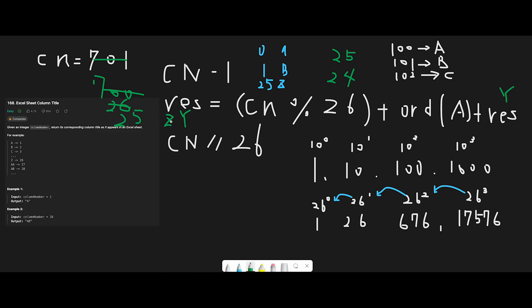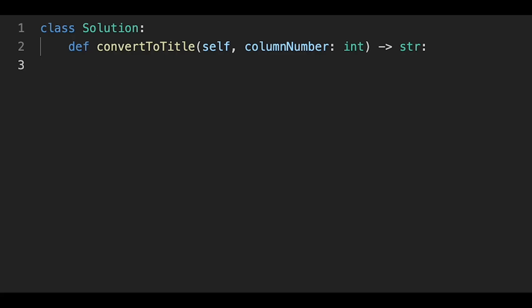And then 25 divided by 26 should be 0, right? So now we reach 0, so in this case we should return ZY. Actually, I copied this number from example three, so example three should be ZY. Looks good. Yeah, so that is the basic idea to solve this question. With that being said, let's get into the code.